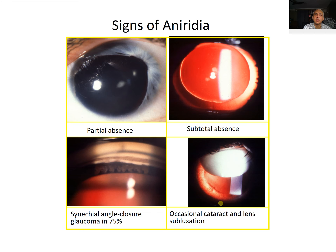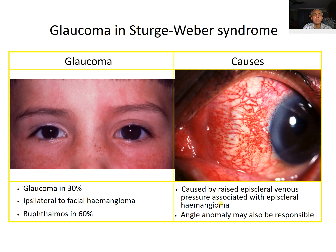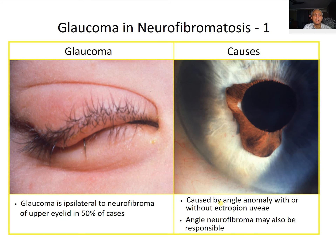Aniridia means absence of the iris; these patients have an abnormal trabecular meshwork and tend to develop glaucoma, which can present early or late. In Sturge-Weber syndrome, glaucoma occurs in 30% of patients with ipsilateral facial hemangioma; buphthalmos is seen in 60% and is caused by raised venous pressure associated with episcleral hemangioma, though angle anomaly may also contribute. In neurofibromatosis type 1, there is an ipsilateral neurofibroma of the upper lid in about 50% of cases, and glaucoma is caused by angle anomaly with or without ectropion uvea or angle neurofibroma.